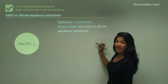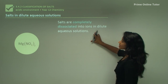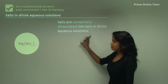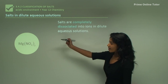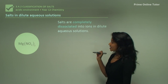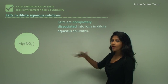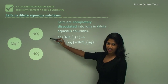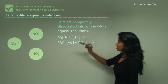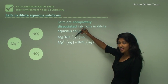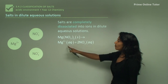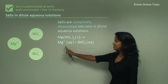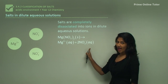Salts in dilute aqueous solutions are completely dissociated into ions. For example, magnesium nitrate is a salt that when it dissociates forms one magnesium ion and two nitrate anions. This magnesium ion is the cation and the nitrate is the anion.